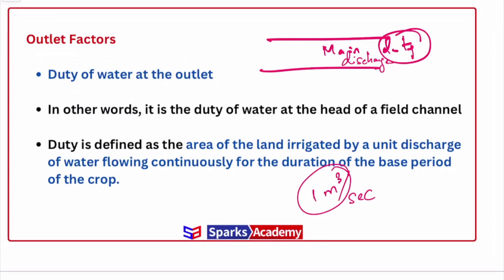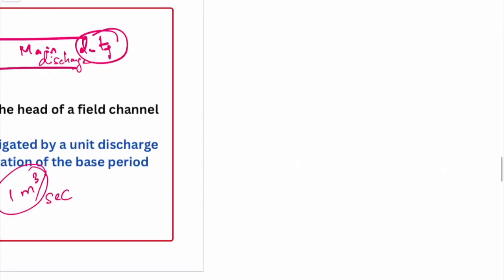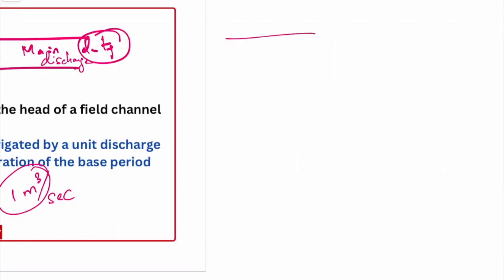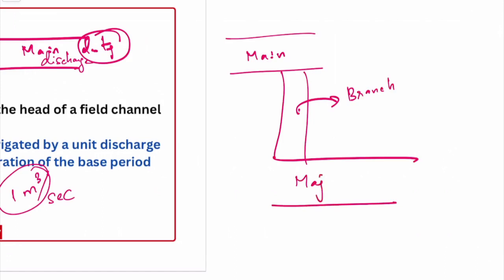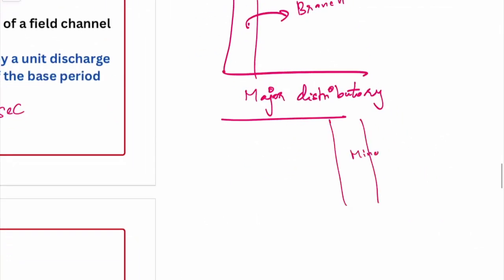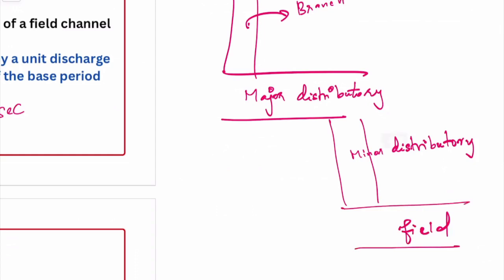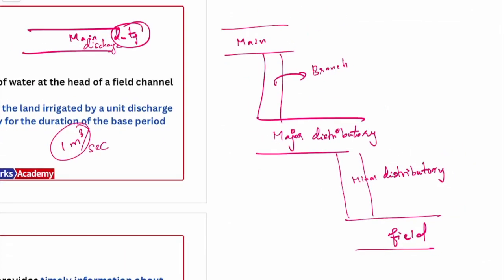In the canal irrigation system, water travels from the main canal, then to branch canals, then to major distributaries, then to minor distributaries, and finally reaches the field. This is the pathway of irrigation water. As water travels through main canal, branch canal, and major distributaries, there are probabilities of water losses — due to evaporation, leakage, and other factors. Once water reaches the field level, the area it travels is much lesser compared to main channels, so losses are lower.